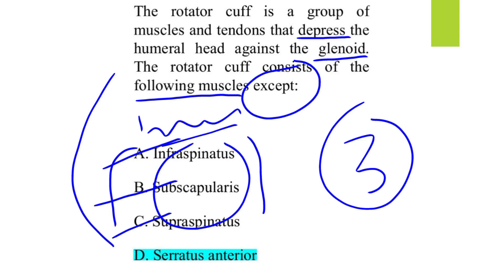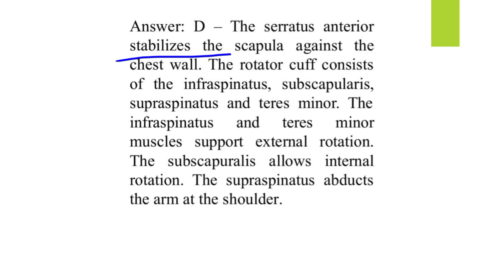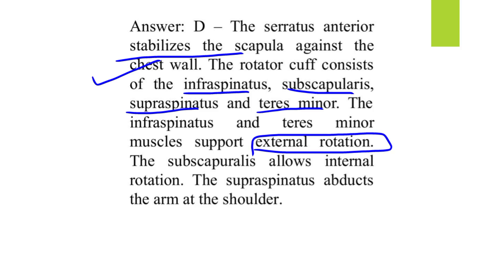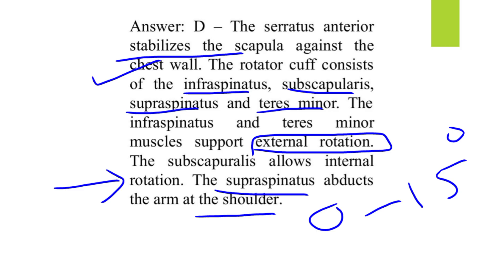The answer is option D: serratus anterior, which is not a rotator cuff muscle. Its role is to stabilize the scapula against the chest wall. Among the rotator cuff muscles, infraspinatus and teres minor perform external rotation, subscapularis performs internal rotation, and supraspinatus performs abduction from 0 to 15 degrees. Beyond 15 degrees, the deltoid takes over.